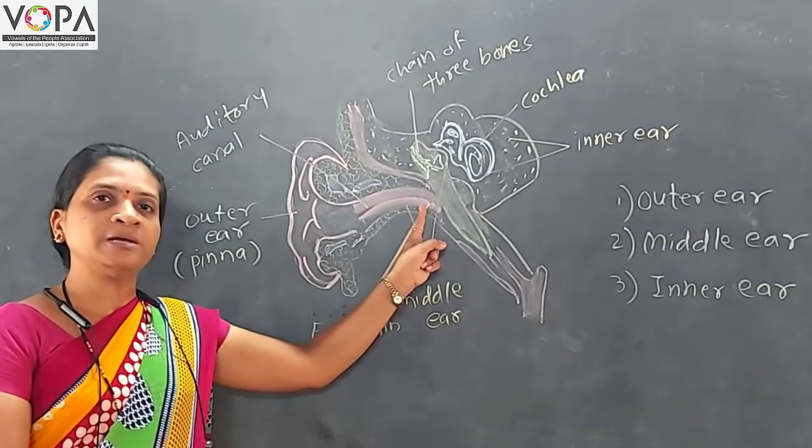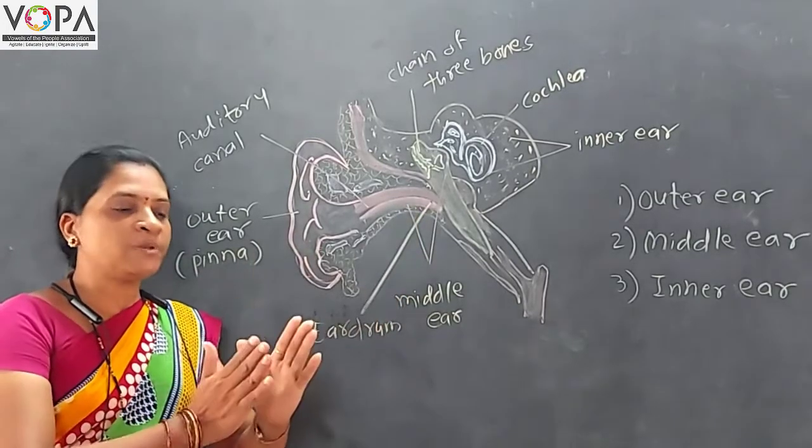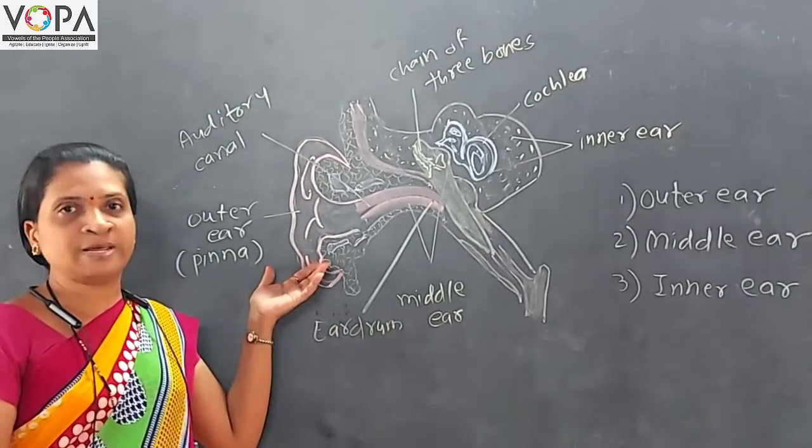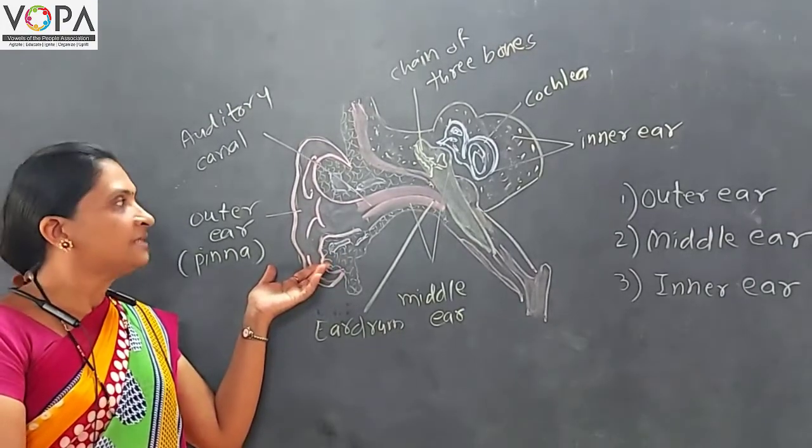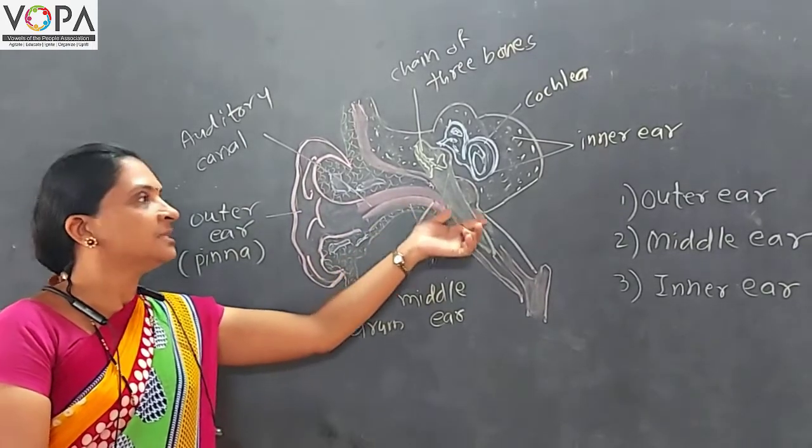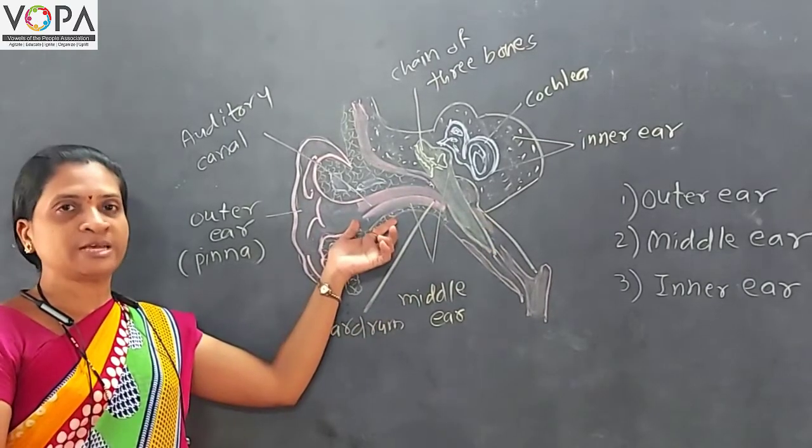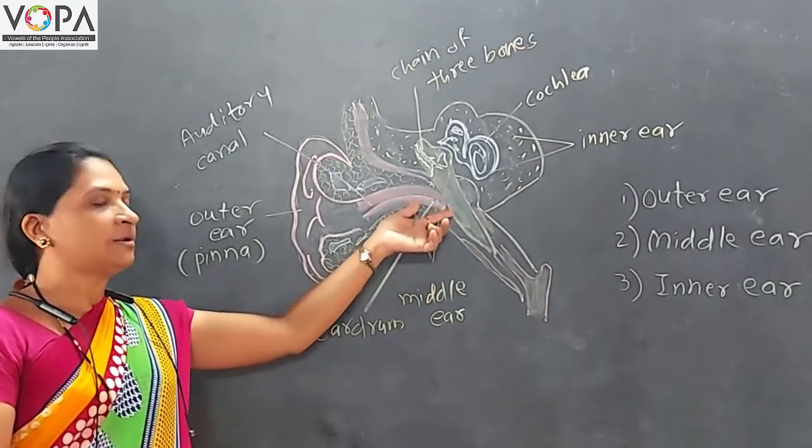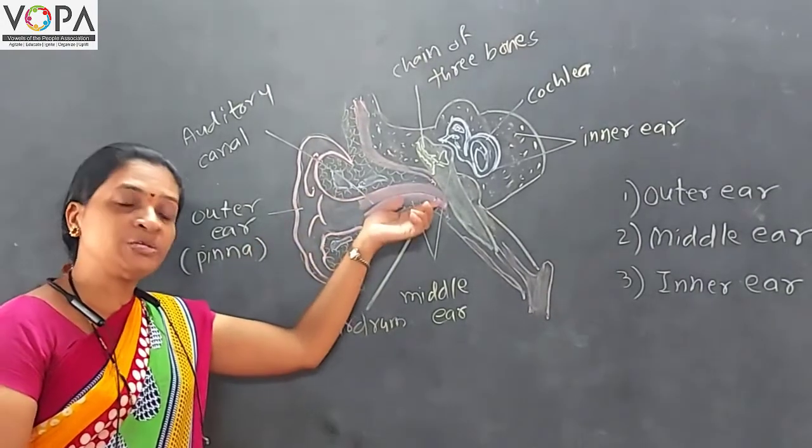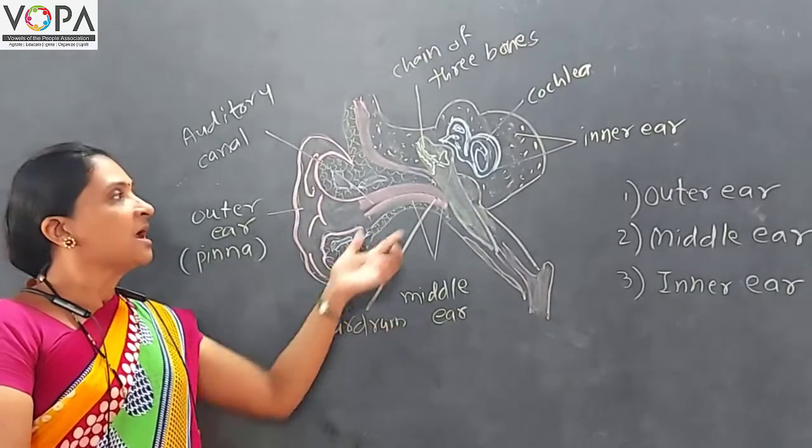Now what happens here at the eardrum - all of you know the sound wave means compression and rarefaction is there. So when compression takes place, that time this eardrum elongates in the inner side. And when the rarefaction takes place, again the eardrum passes in the outside direction. Means the vibration takes place here towards the eardrum.